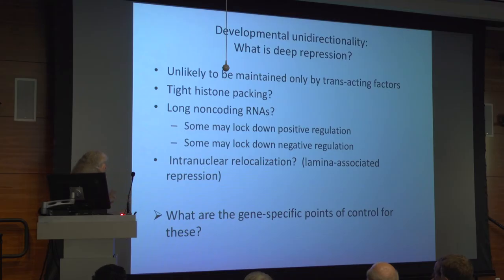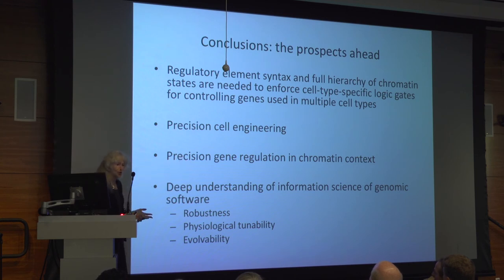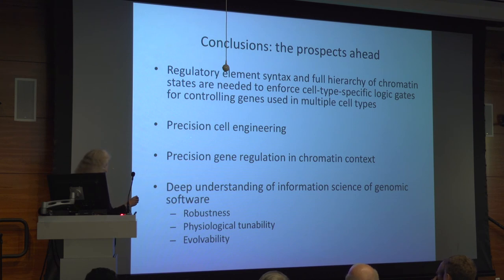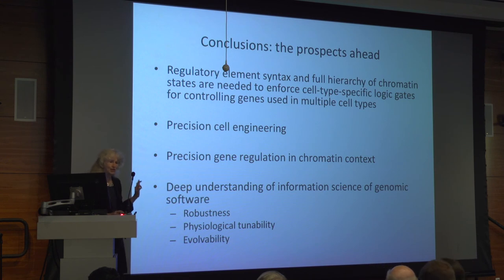The point is: what are the gene-specific points of control for these? My argument is that while we've moved quickly through the first generation of post-genomic research, we've missed perhaps the most rewarding information science aspect of the genome — which is how process is encoded in the genome, not just structure. This is an emergent structure of a process. It depends on a full understanding, a much more complete hierarchy of chromatin states, in order to fully account for what we know biological systems do. We need this in order to do precision cell engineering.